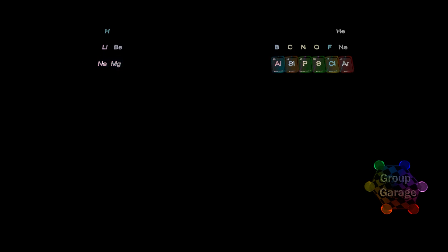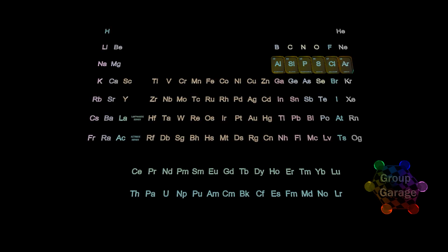And this video will now continue along the third row and show how the electrons from the groups on the right side, in this case aluminum, silicon, phosphorus, sulfur, chlorine, and argon, will fill the P orbitals.